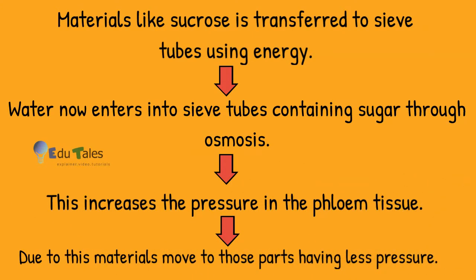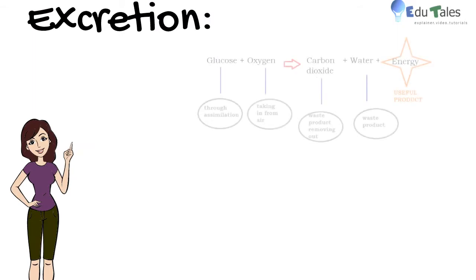Due to this, food will move to those parts of the plant having less pressure in their tissues. This will allow phloem to transport food according to the needs of the plant. Here we are completing transport in plants. Let us move on to excretion.